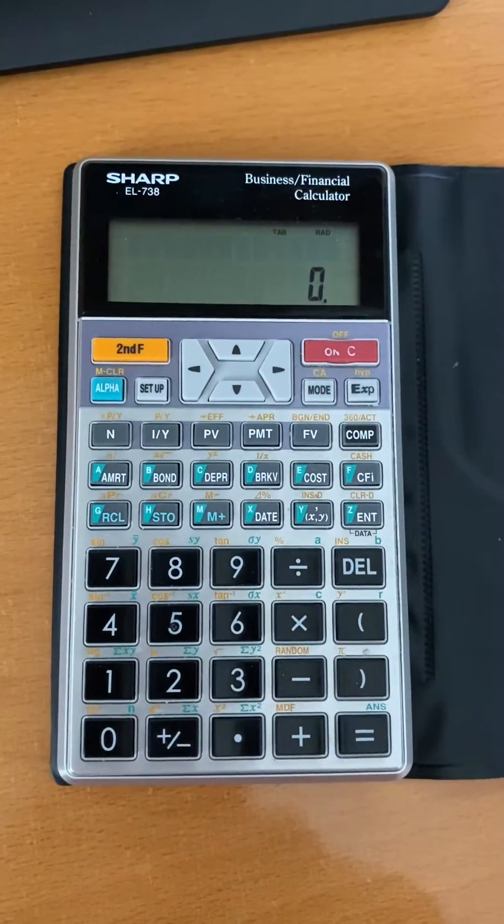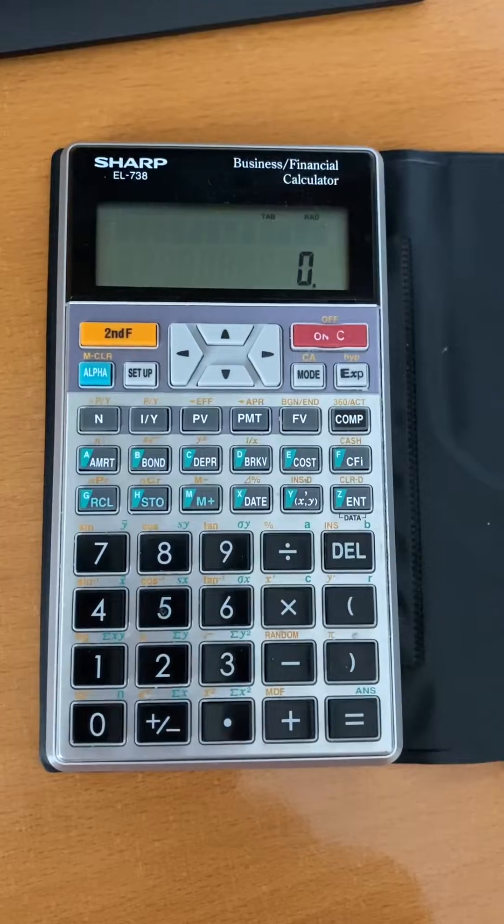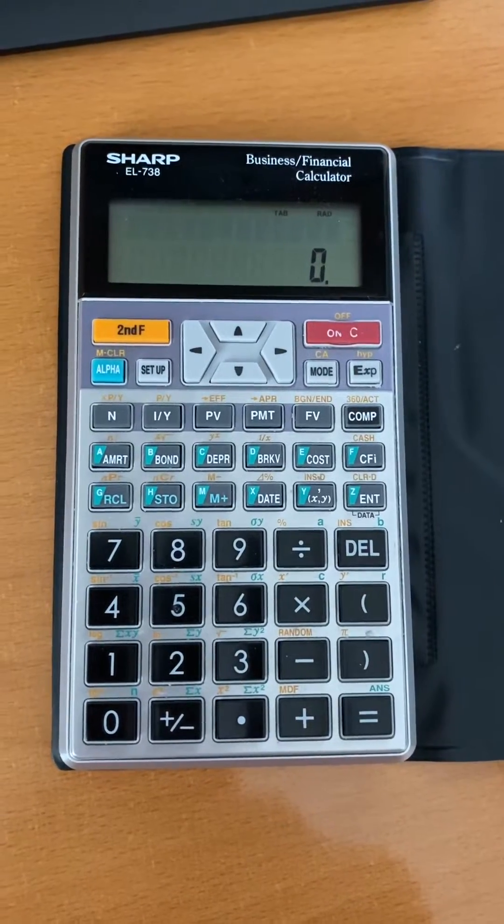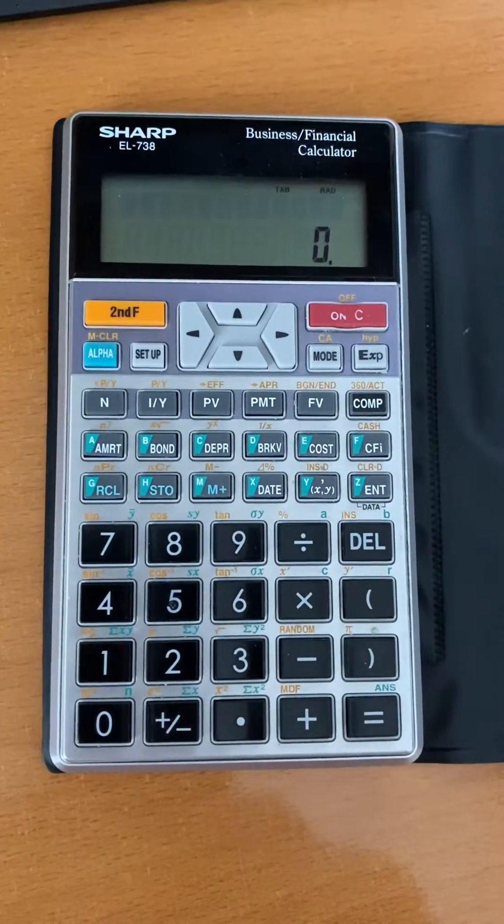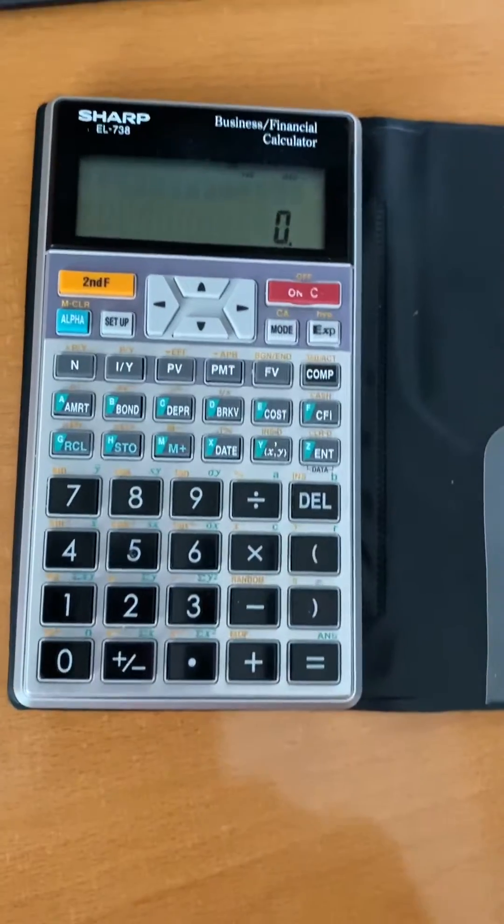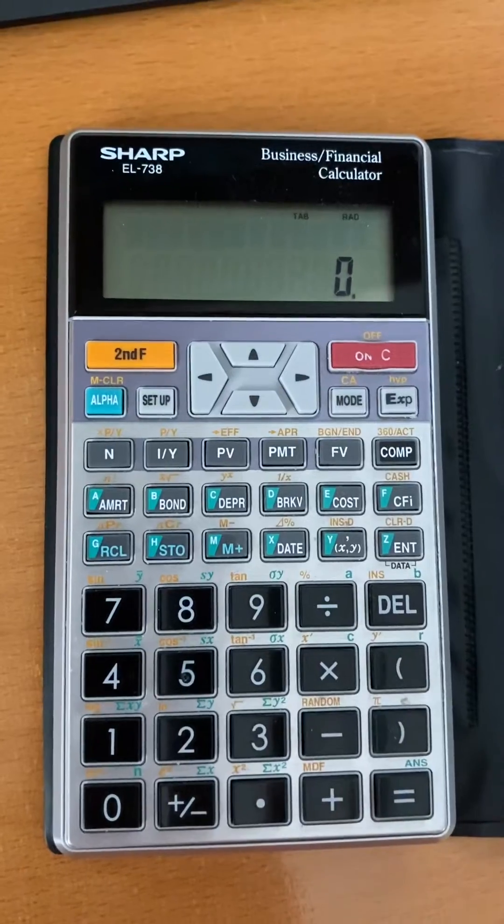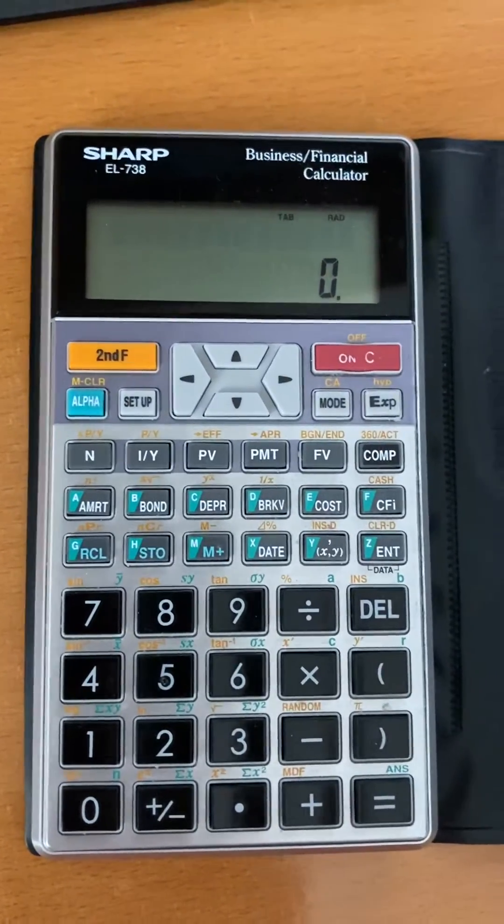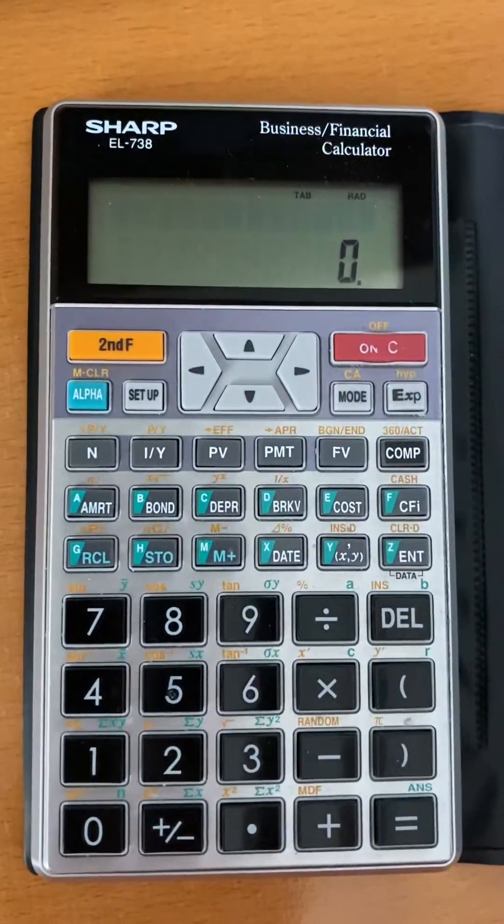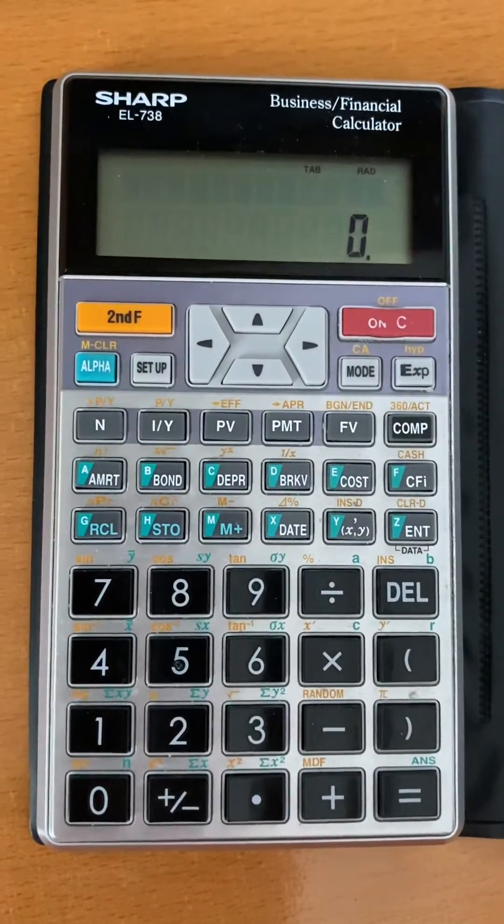This video is on setting up the decimal format on the Sharp EL-738 business financial calculator. I like to display all the digits that are significant after the decimal place, but no extra ones.